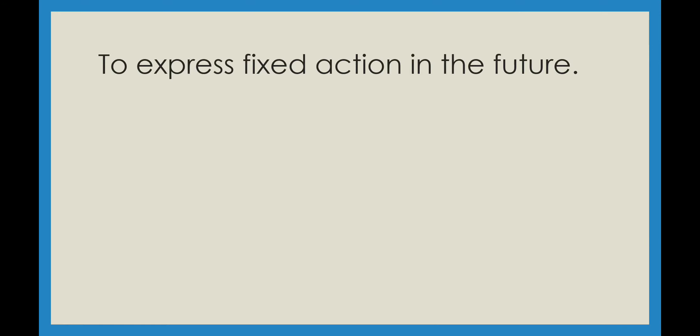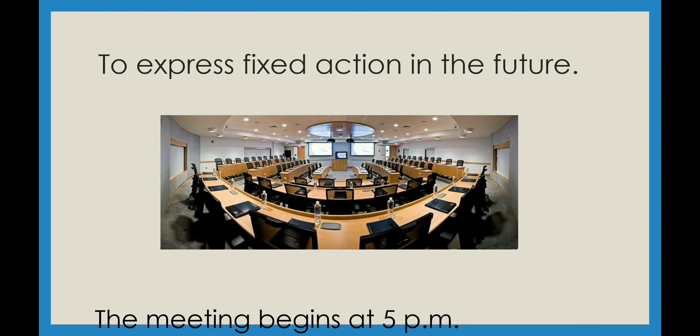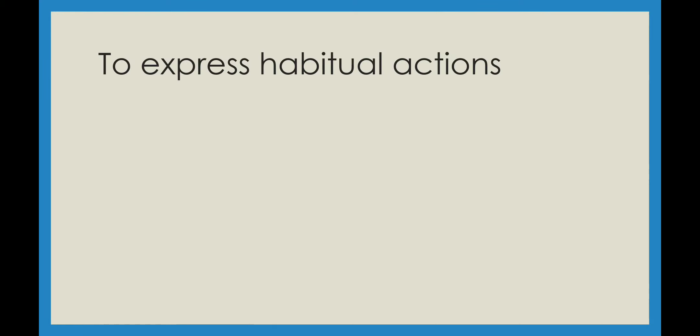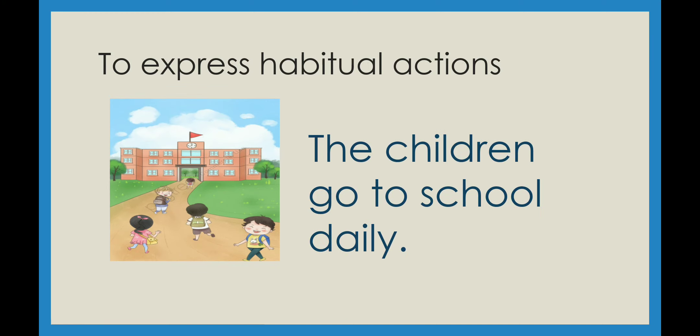Now students, let's understand where simple present tense is used. First, it is used to express a fixed action in the future — for example, the meeting begins at 5 p.m., because we have already fixed that action. Second, it is used to express habitual actions — those actions that people repeatedly perform. For example, the children go to school daily. Going to school daily is a habitual action, and that is why we use present tense here.